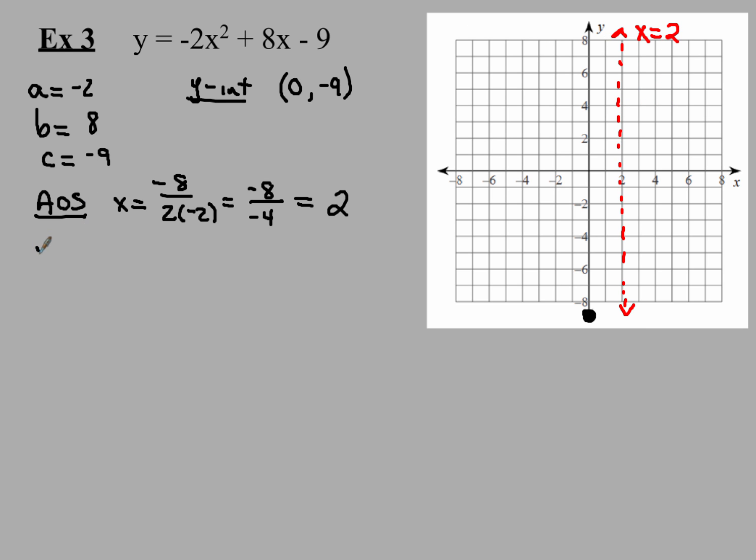Next, let's find the vertex. The vertex, I know, is going to be 2 and then some number. To find that number, I've got to put in 2 anywhere there's an x in my original function. Write that like this: y(2), because we're plugging in 2. So y(2) = -2(2)² + 8(2) - 9.